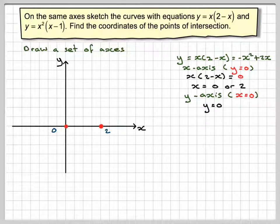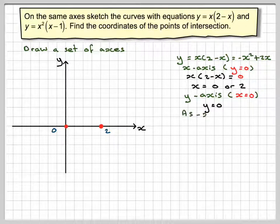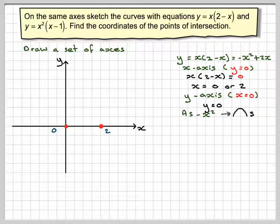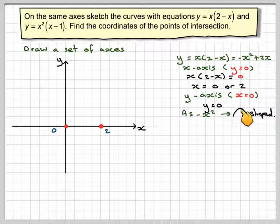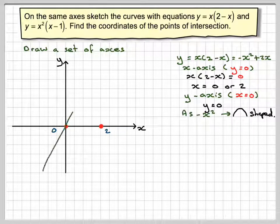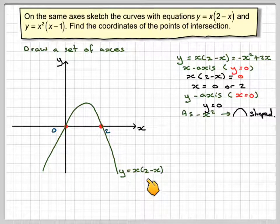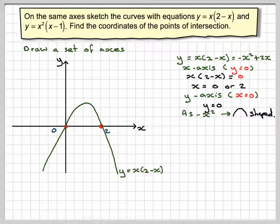The most dominant part of this is -x², which means the shape of the quadratic will be an n-shaped parabola. Therefore we draw our quadratic sketch making sure we've got an n-shape.